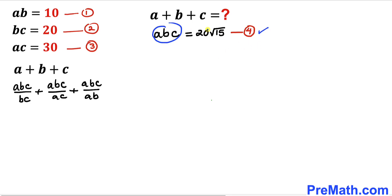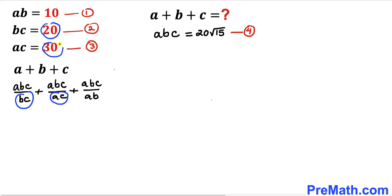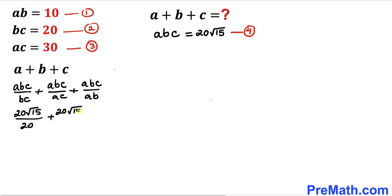From equation four, abc equals 20 times the square root of 15, so I substitute that in every numerator. For the denominators: bc equals 20, ac equals 30, and ab equals 10. So we get 20 root 15 over 20, plus 20 root 15 over 30, plus 20 root 15 over 10.